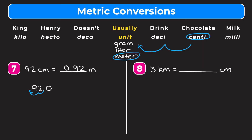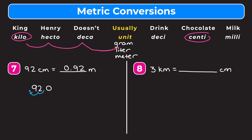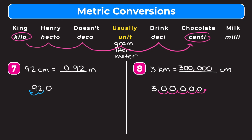Finally, in our last example, we have 3 kilometers and we want to change it into centimeters. Going from kilo all the way to centi, we have to move one, two, three, four, five spaces to the right. Rewriting 3 as 3.0 and moving the decimal point five places to the right, filling in the blank spots with zeros, we get that 3 kilometers is equal to 300,000 centimeters. Hopefully this video helped you understand metric conversions — just remember the phrase: King Henry doesn't usually drink chocolate milk.